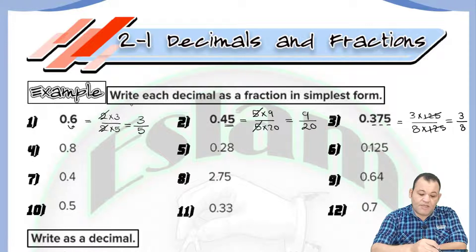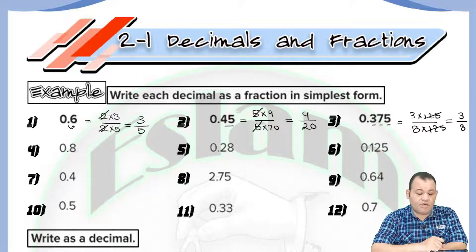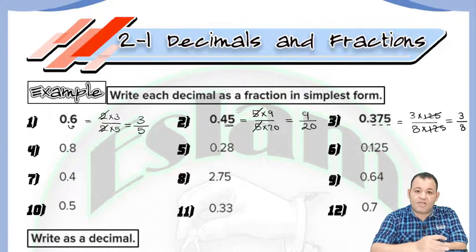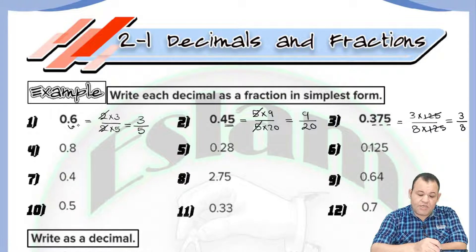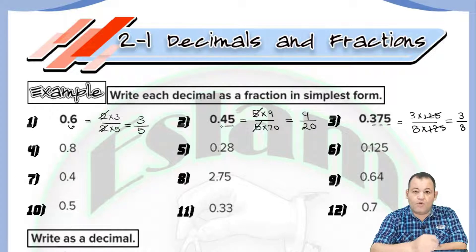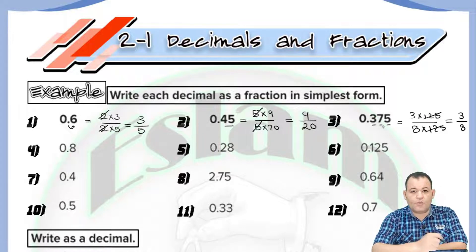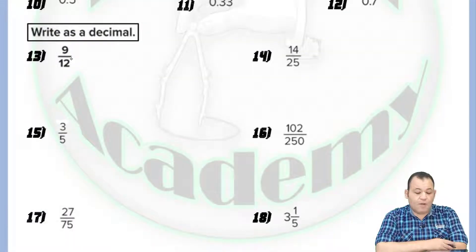So again, how do we write a decimal as a fraction? Step one: look at the whole number and write it. Step two: look at the digits to the right of the decimal and write them as the numerator. If there is one digit, the denominator is ten. If there are two digits, it's one hundred. If there are three digits, it's one thousand.